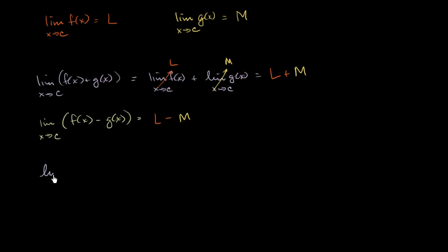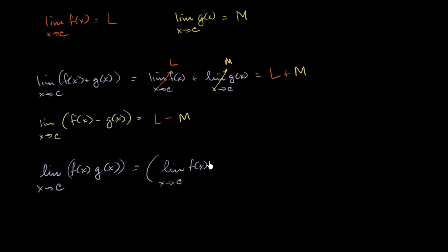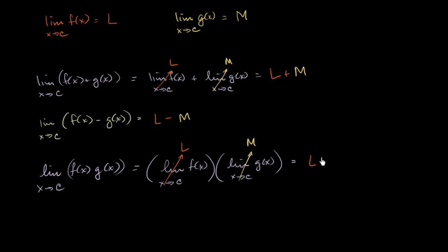What happens if you take the product of the functions? The limit of f of x times g of x as x approaches c is going to be equal to the limit of f of x as x approaches c times the limit of g of x as x approaches c. This is a fairly intuitive property of limits, and this is just equal to L times M.